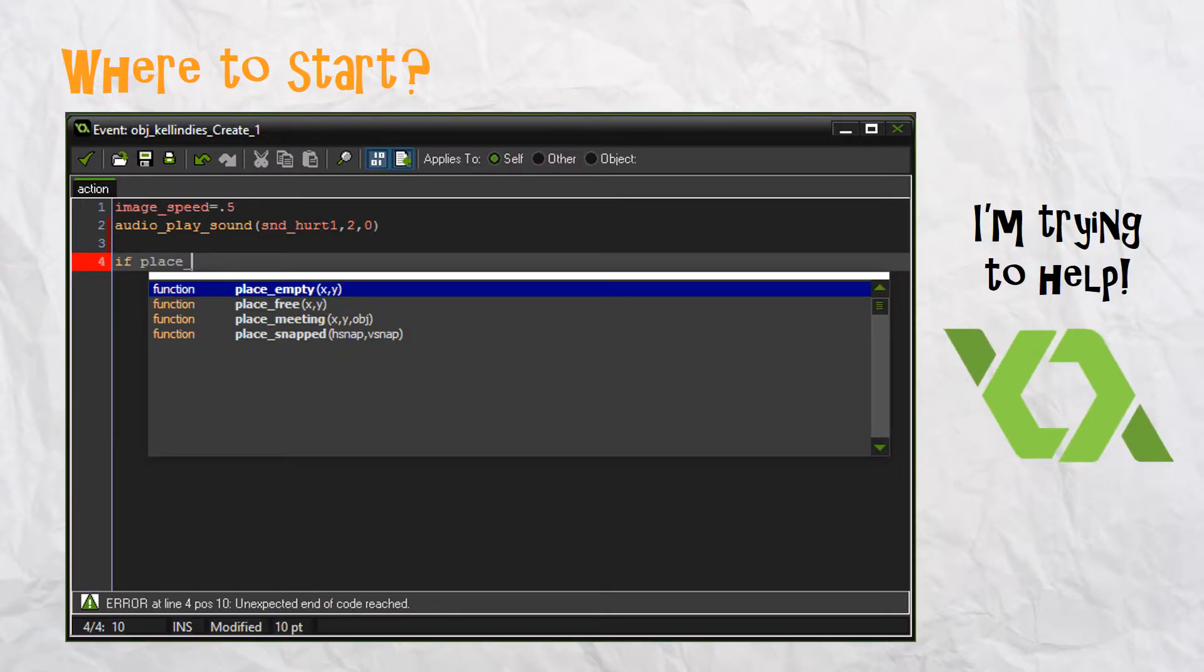All right. This is a big, big, big deal. GameMaker is trying to help. Look how friendly it is over there. See, it says, I'm trying to help. Go ahead and activate when you open up that piece of code, double click on it, and then activate those two guys up in the middle. They're going to do code checking and code completion help. And if there's a problem with your code, it'll try to alert you to it. It really is trying to help you. It says at the bottom, unexpected end of code reached. That means we haven't filled it out yet. And here it's got code completion help. It says, if place underscore what? Look at that. It says, place empty, place free, place meeting, place snapped. And it needs the rest of it. It even tells you a little tip there. It says, place empty xy, place free xy, place meeting xy obj. It's trying to help you fill out the rest of the code. So it really is trying to help you if you pay attention to what it's saying. So do look at that carefully. But you're going to need to activate those two little guys at the top to get that help.